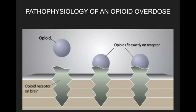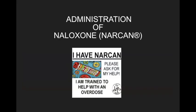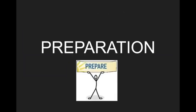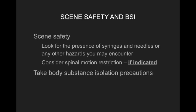When discussing the pathophysiology of opioid overdoses, you can see from this figure that opioids fit right onto receptors and get into the cells to act on the body and brain. The administration of Narcan is going to be discussed next. What's important in any medication administration is making sure that you are preparing properly to give this medication, and that always starts with scene safety and body substance isolation precautions.